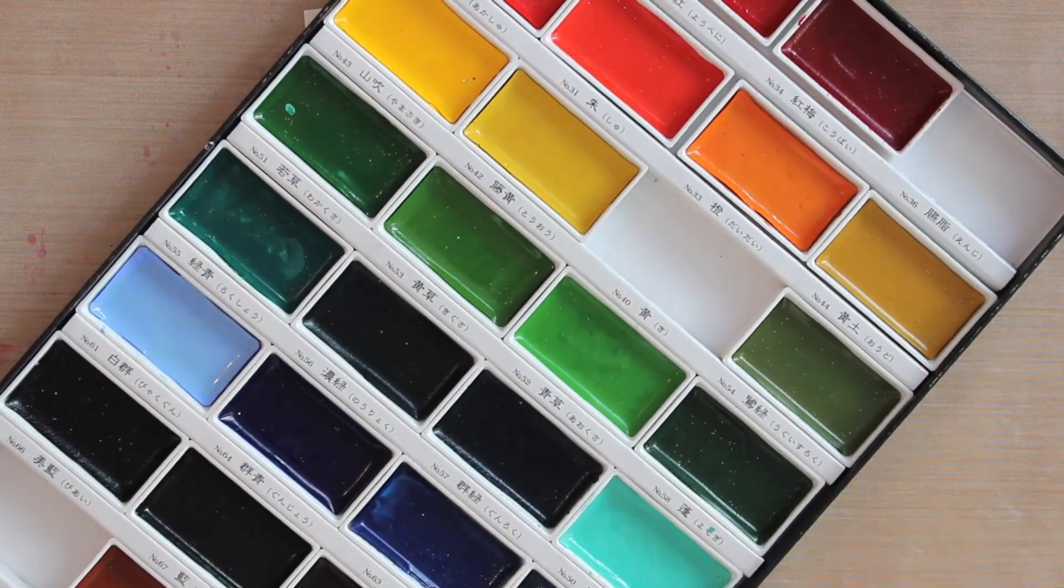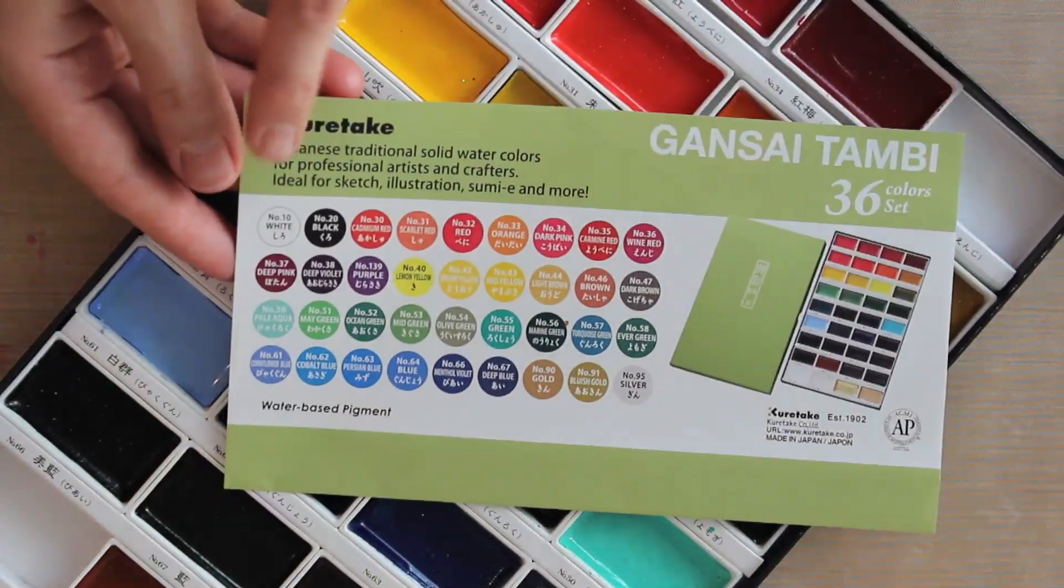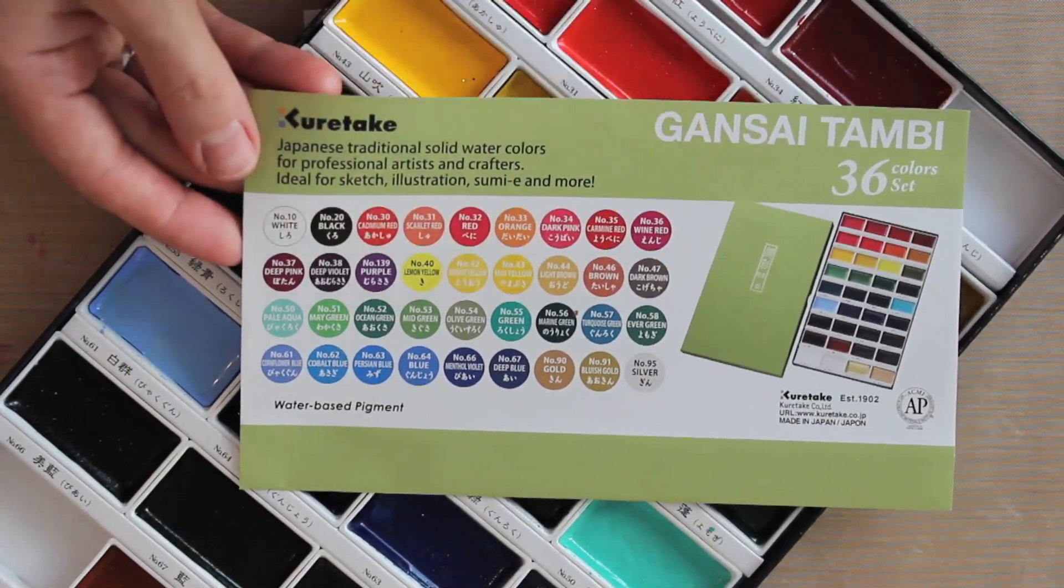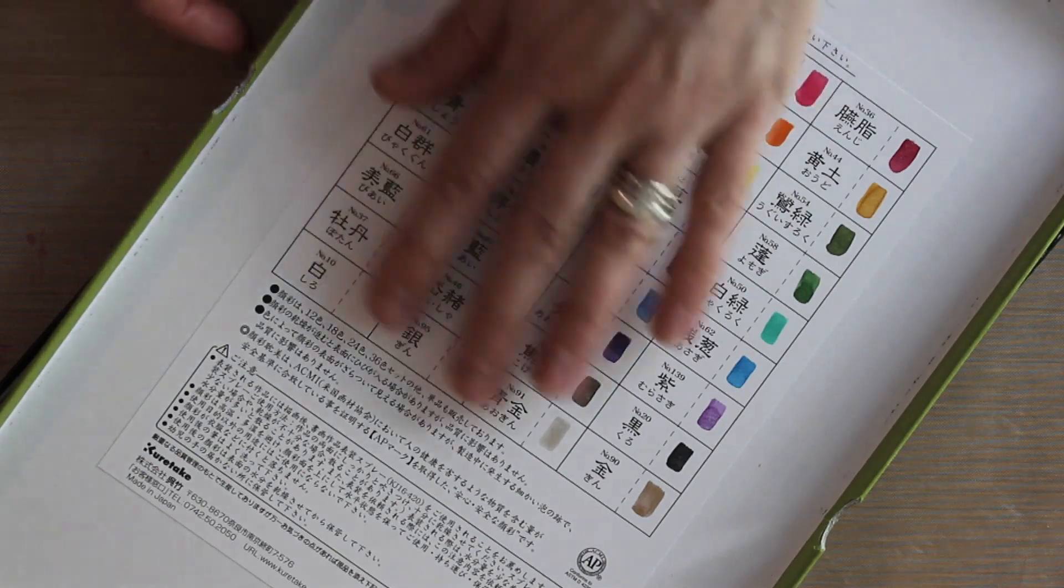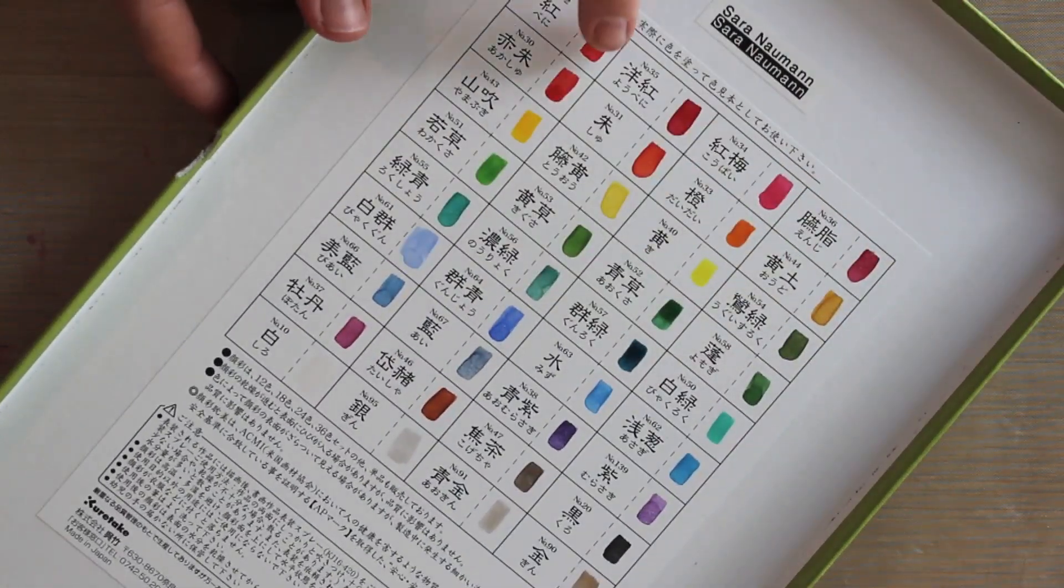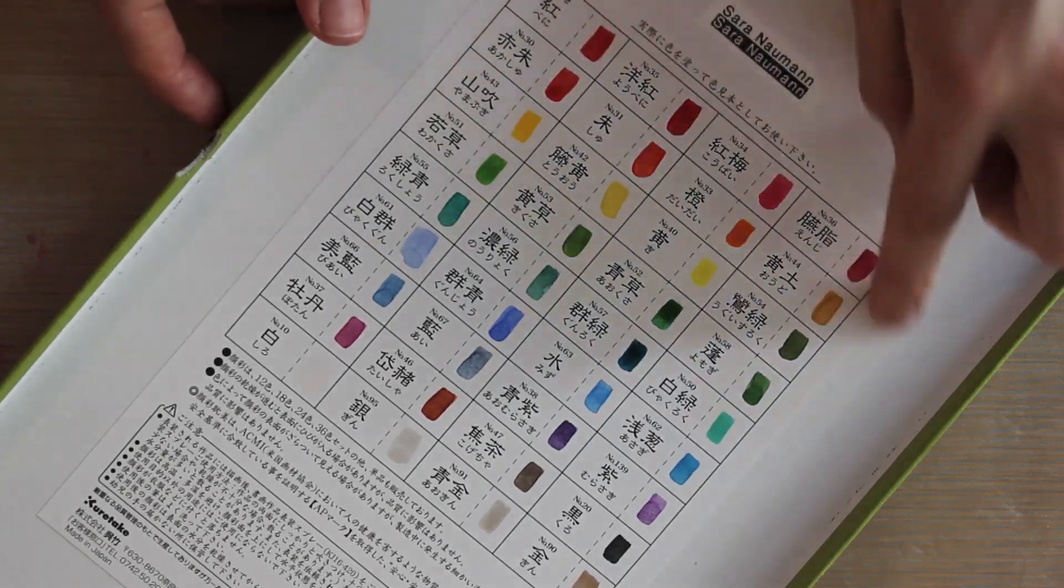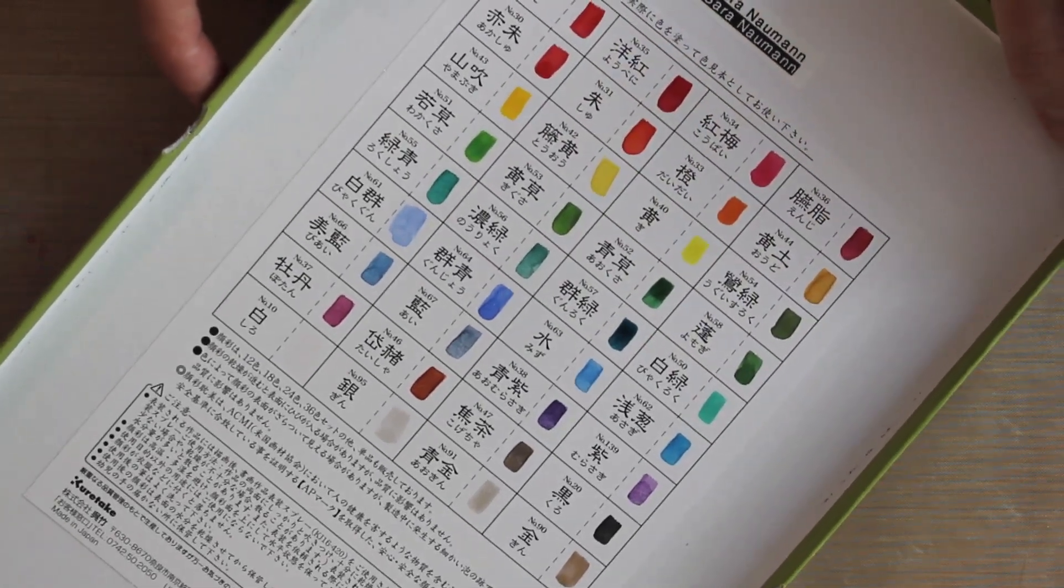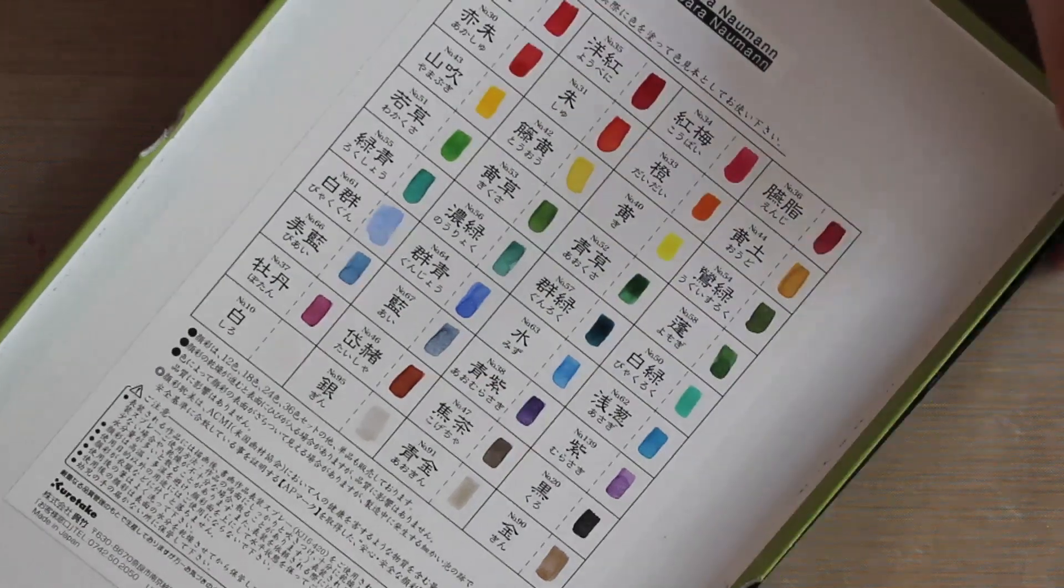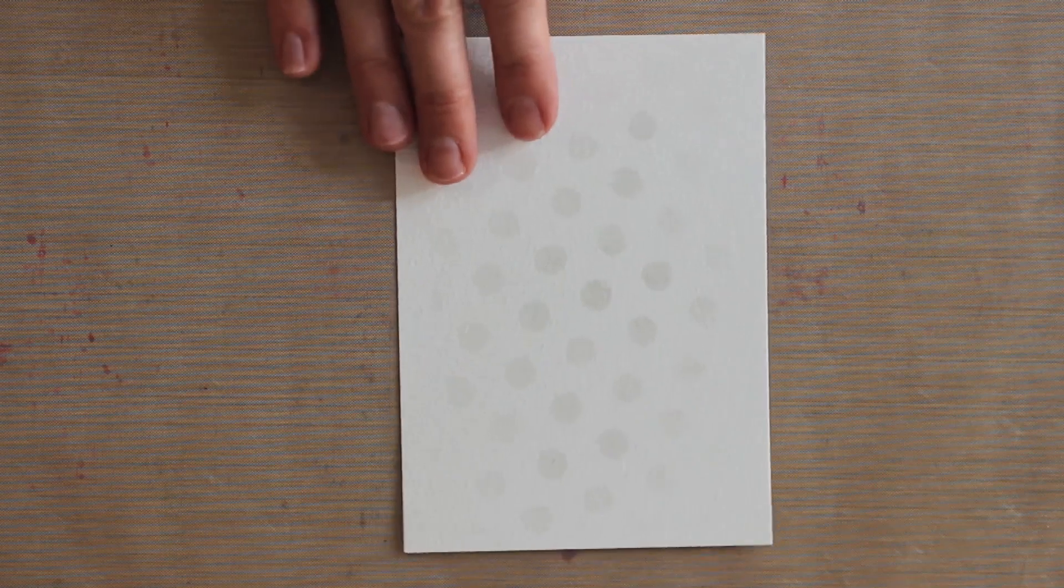A couple of other things about this set. If you're ever wondering the names of those colors and you can't read Japanese, hang on to the insert sheet because that gives you all of the names and the corresponding numbers. The other thing you get on the inside of the box is a swatch area. This comes blank and you fill in the colors, which is a great way to get to know your watercolor set and have a nice little cheat sheet as you're working. So great things with the watercolor set, I love this one.